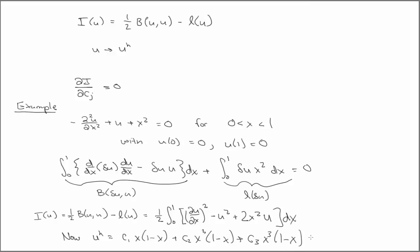And then we'll plug that into this function, evaluate the integral, and then we have an ordinary algebraic function in terms of the unknown coefficients. And then we can just minimize that with respect to c_1, c_2, and c_3, and then solve those equations simultaneously for the unknown coefficients. So for this example, let's go ahead and try that.